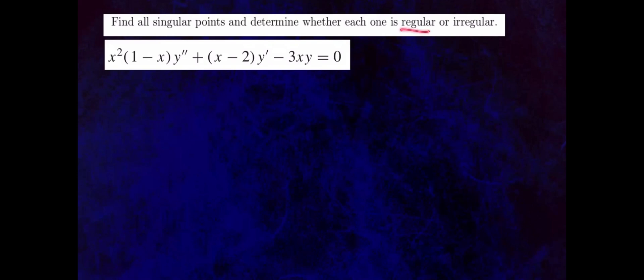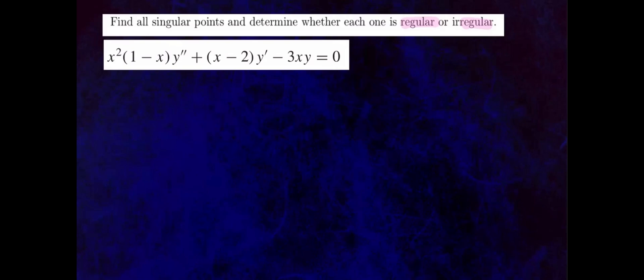We want to find all singular points and determine whether they're regular or irregular for this differential equation. First, label the coefficients: p of x is the coefficient of y double prime, q of x is the coefficient of y prime, and r of x equals 3x is the coefficient of y.